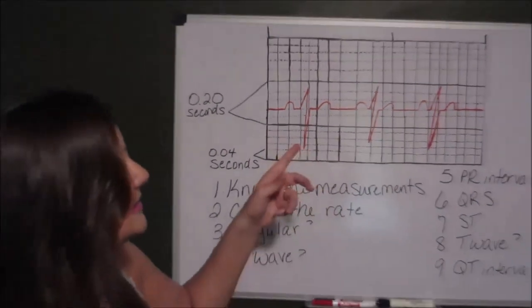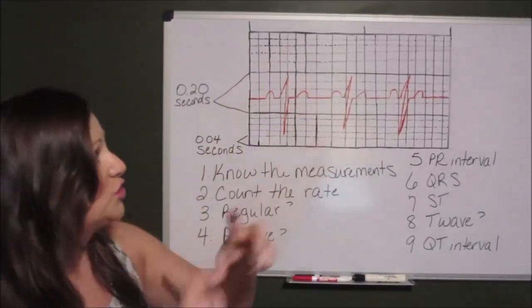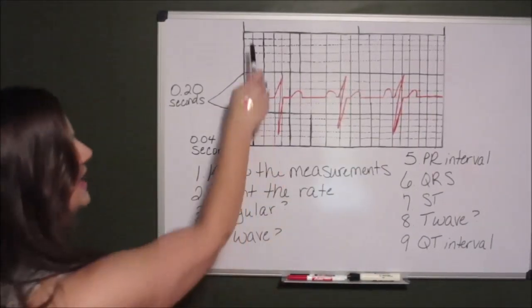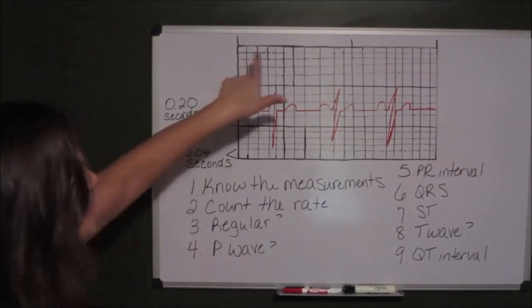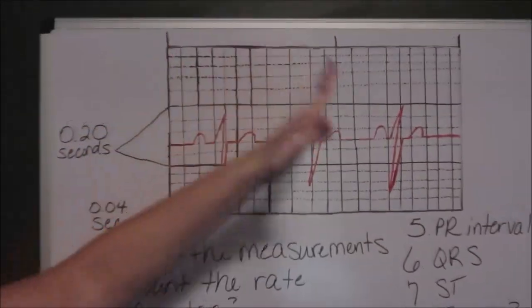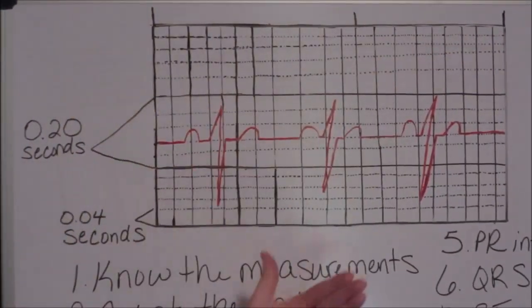Count the rate. A 6 second strip is in between 3 of these lines at the top of the EKG paper.